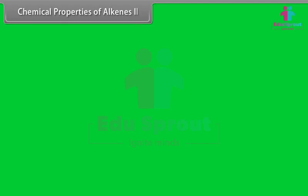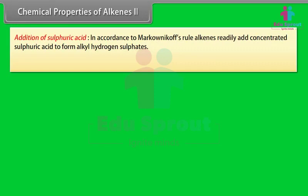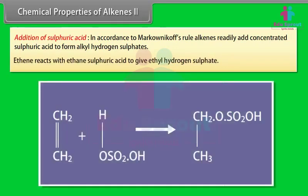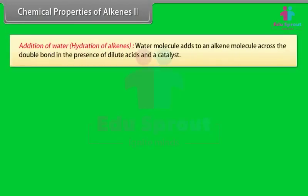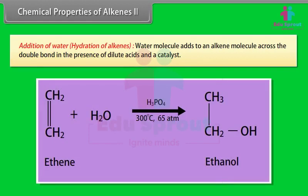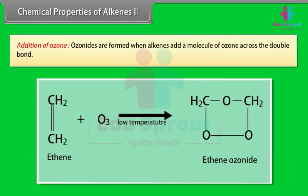Addition of Sulfuric Acid: in accordance with Markovnikov's rule, alkenes readily add concentrated sulfuric acid to form alkyl hydrogen sulfates. For example, ethene reacts with concentrated sulfuric acid to give ethyl hydrogen sulfate. Addition of Water (Hydration of Alkenes): water molecules add to an alkene across the double bond in the presence of dilute acid and a catalyst. For example, ethene gives ethanol when a mixture of ethene and steam is passed over phosphoric acid and silica at 65 atmospheres and 300°C. Addition of Ozone: ozonides are formed when alkenes add ozone across the double bond; ethene gives ethene ozonide.